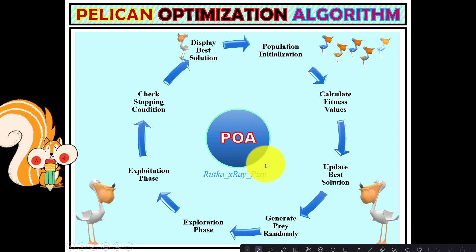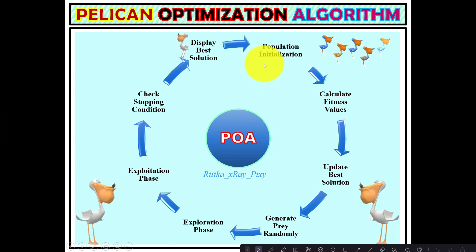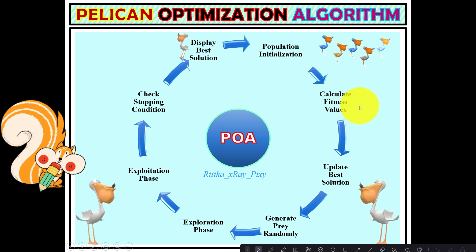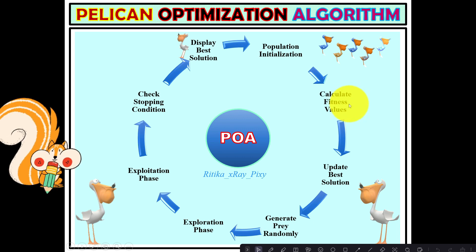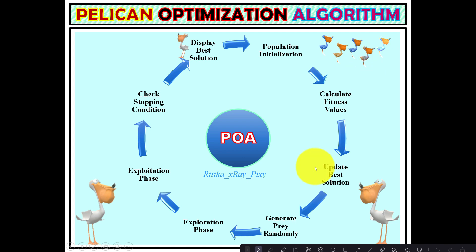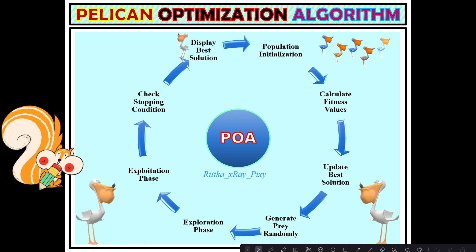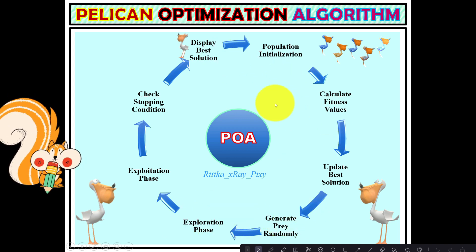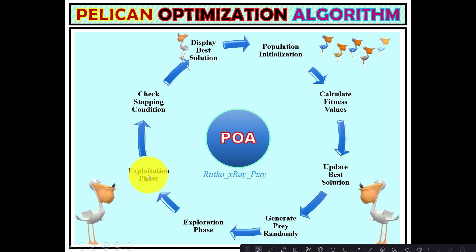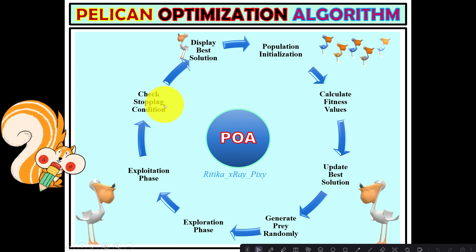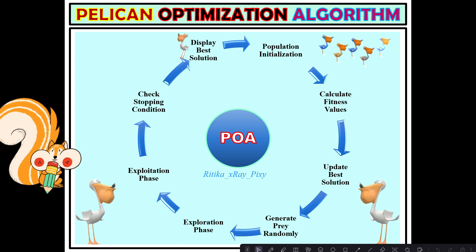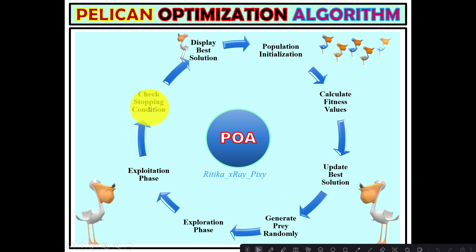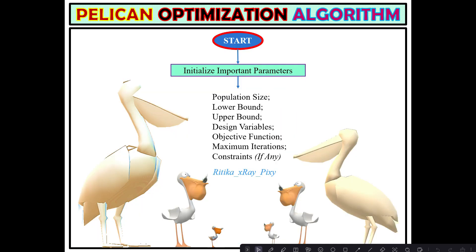The basic process of the Pelican Optimization Algorithm starts by randomly initializing the population of N agents (virtual pelicans). Each pelican is then evaluated based on its fitness value using the objective function. The pelicans explore the search space, a target is generated randomly, and they explore and then exploit the target. If the stopping criteria is met, the best solution is displayed; otherwise, the loop repeats. The flowchart walks through these steps in detail.